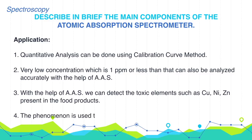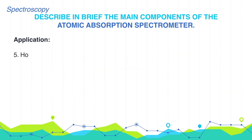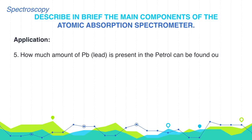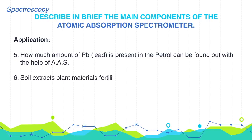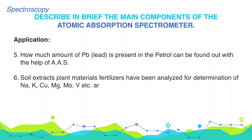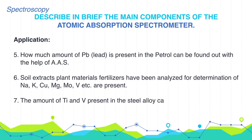4. The phenomenon is used to estimate sodium and potassium present in blood serum. 5. The amount of lead present in petrol can be found using AAS. 6. Soil extracts, plant materials, and fertilizers have been analyzed for determination of sodium, potassium, magnesium, molybdenum, vanadium, etc. 7. The amount of titanium and vanadium present in steel alloys can also be determined with the help of AAS.